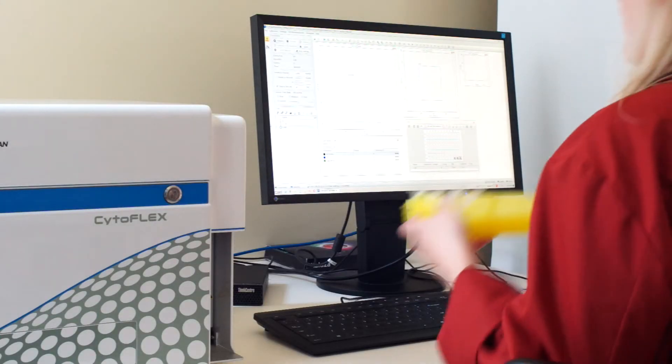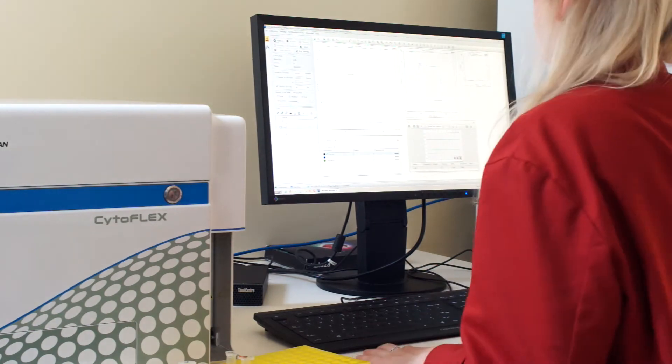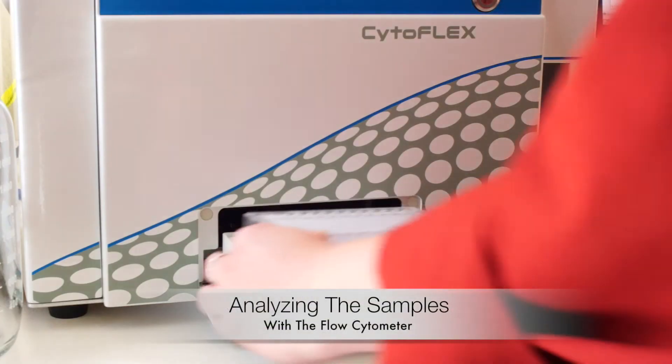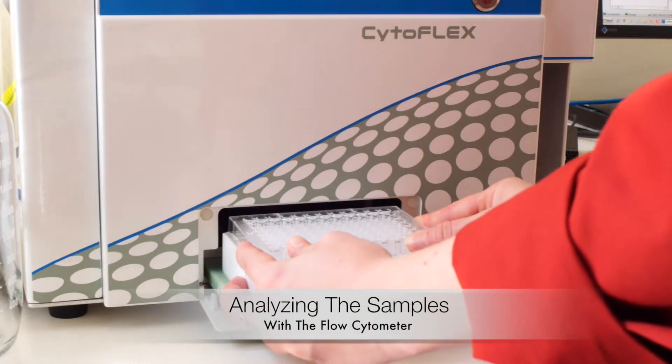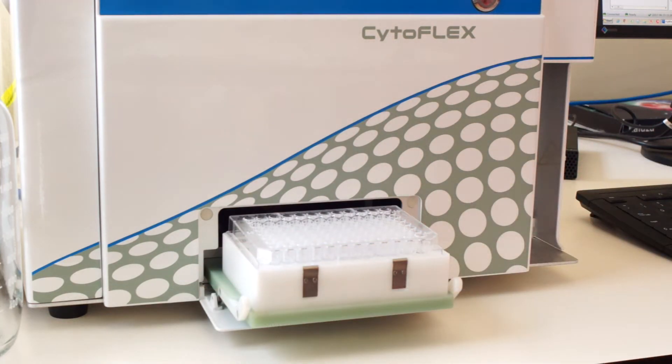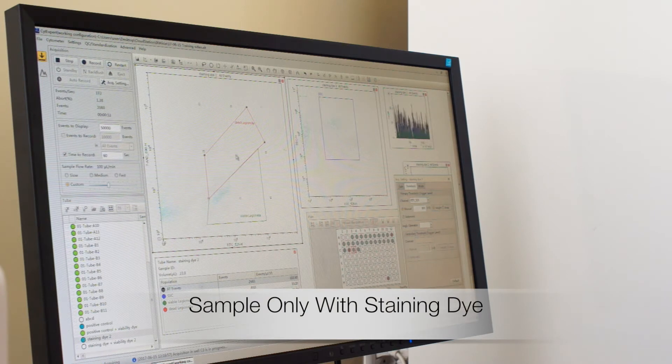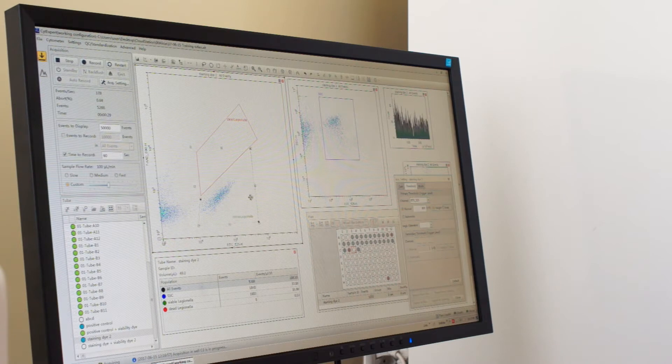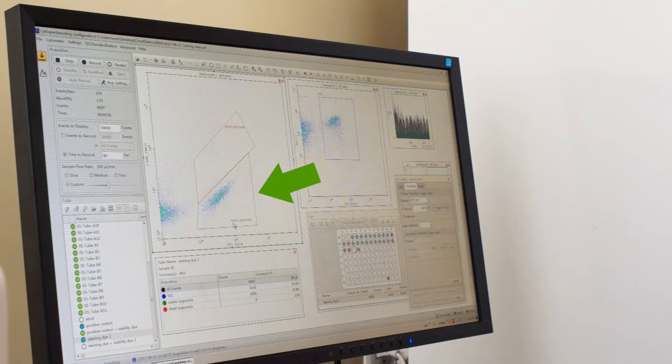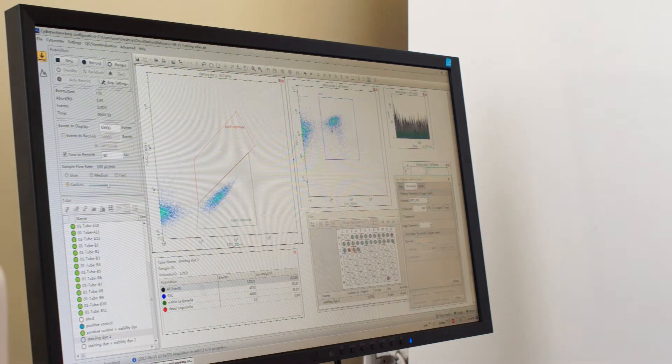In this last step I am quantifying the target cells with a flow cytometer. Here I am looking at the sample that was only stained with green staining dye. All Legionella cells that were present in this sample, dead or alive, are visible as this population here in the green area. A major advantage of the RQ Macro method is that also viable but non-culturable cells are detected.